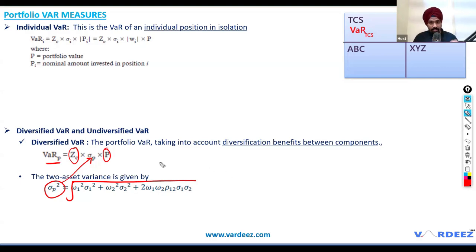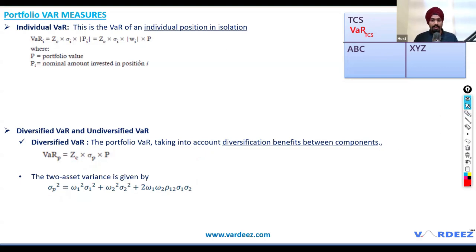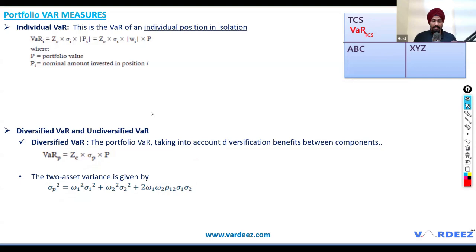That was just two assets. When we have multiple assets — in our example, four — we can use a different formula. Within a portfolio, we cannot neglect correlation; we really have to appreciate the correlation parameters.